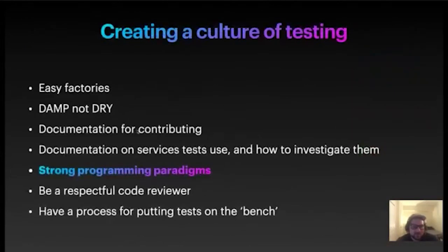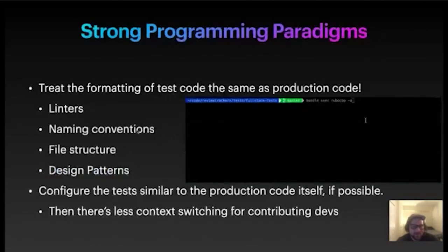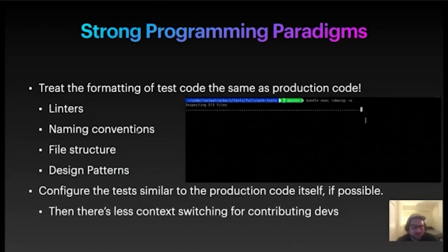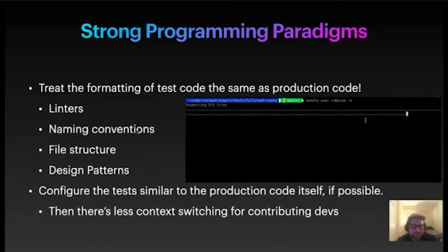More about creating the culture of testing: I would suggest we have strong programming paradigms in our test code. Treat the formatting in your test code the same as production code — run your linters, have good naming conventions, file structure, design patterns, use all those things. Don't tell people "oh, it's just test code, we can do it however we want." Have the exact same standards as you do for your production code.